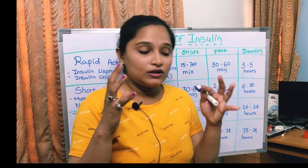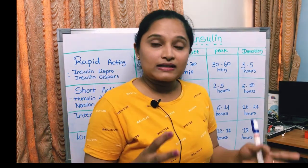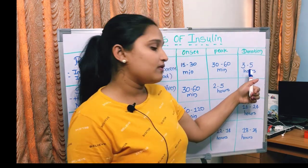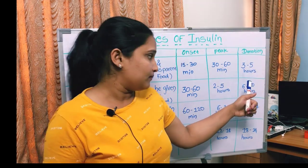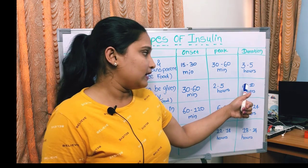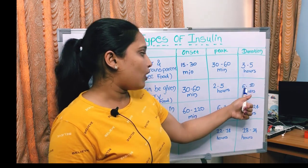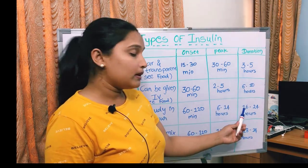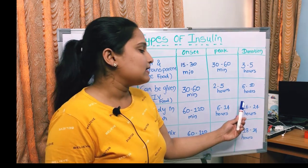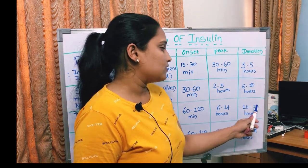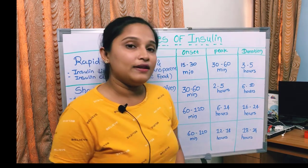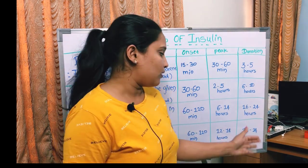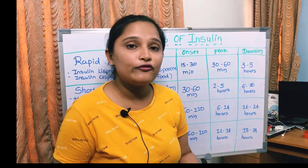The duration of insulin effect in the body is 3 to 5 hours for rapid acting insulin, 6 to 10 hours for short acting insulin, 16 to 24 hours for intermediate acting insulin, and 18 to 24 hours for long acting insulin.